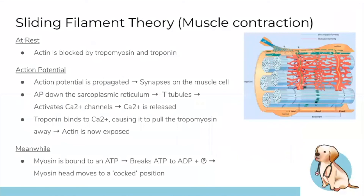The sliding filament theory explains muscle contraction. The brain sends a signal down through neurons, releasing neurotransmitters that synapse on the muscle cell. The action potential travels down T-tubules, activating calcium channels and causing calcium to be released from the sarcoplasmic reticulum.